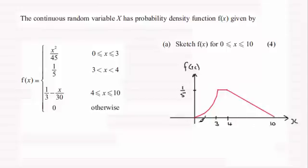Now it's not finished there because it's 0 otherwise. So therefore our graph would be 0 up to the origin there and 0 from 10 onwards. I'll mark that in as the origin 0 there. So there we go. There's a sketch of f of x.